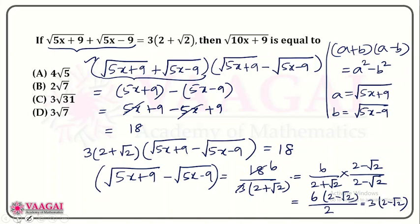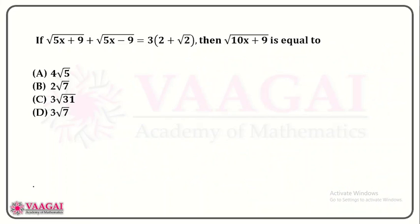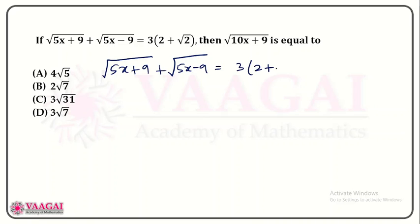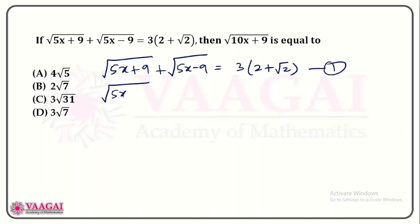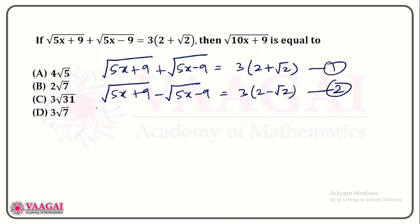We're almost at the end of the problem. Let's note both expressions: Equation 1 from the question is root of 5x plus 9 plus root of 5x minus 9 equals 3(2 plus root 2). Equation 2, which we just derived, is root of 5x plus 9 minus root of 5x minus 9 equals 3(2 minus root 2).